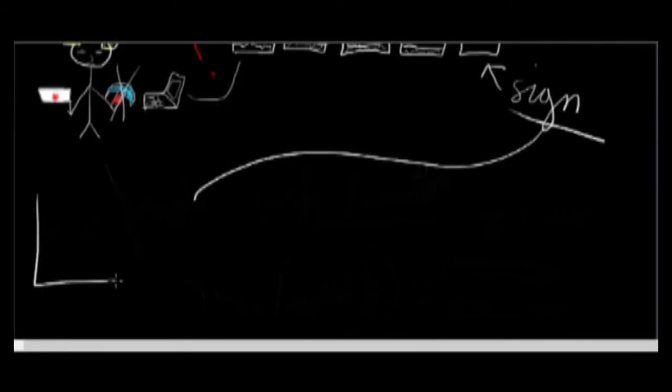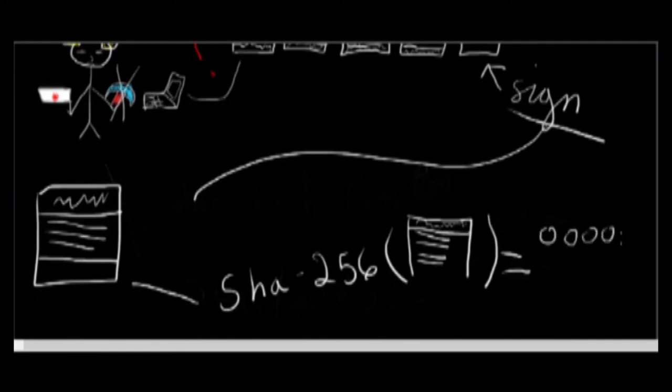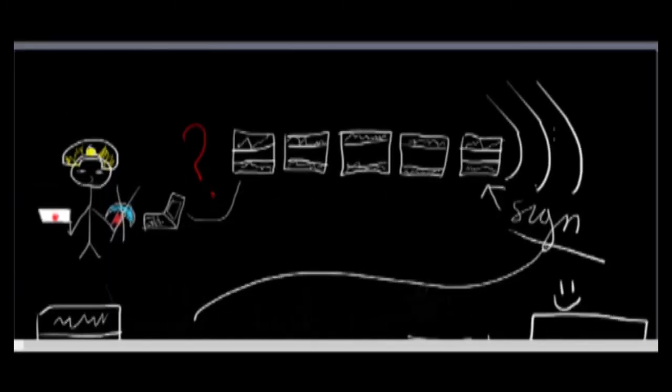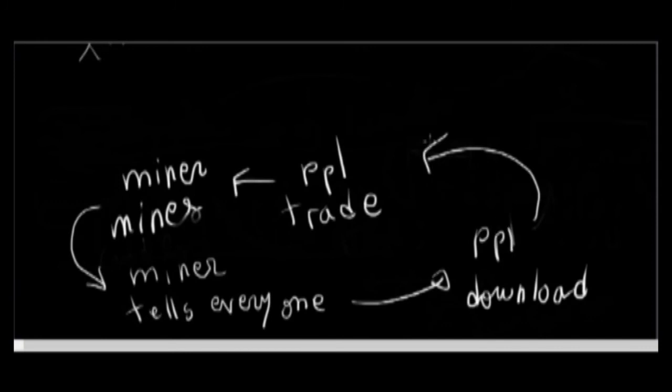Finding that hash is extremely hard but it makes the transactions in the block rock solid. The miner broadcasts his results and everyone downloads his block, including the other competing miners. And the cycle continues.